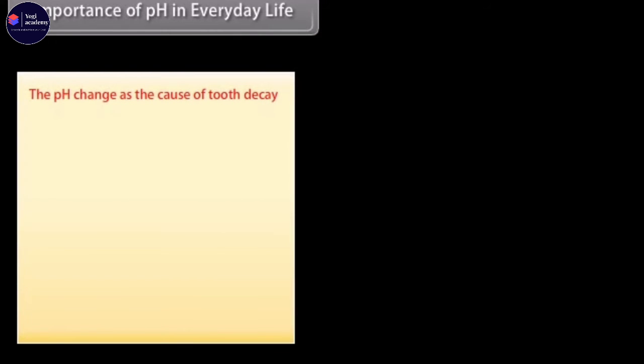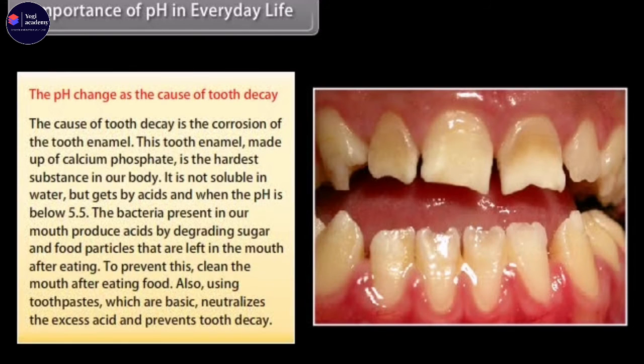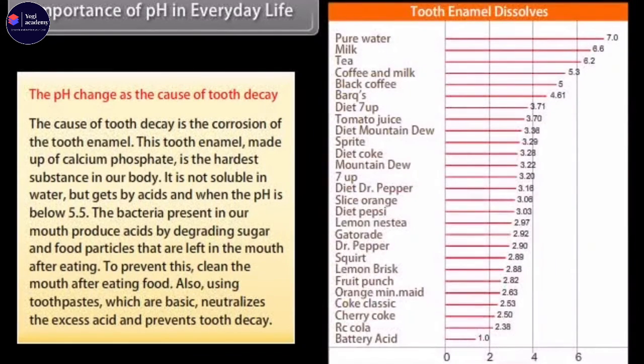The pH change as the cause of tooth decay. The cause of tooth decay is the corrosion of the tooth enamel. This tooth enamel, made up of calcium phosphate, is the hardest substance in our body. It is not soluble in water but gets by acid when the pH is below 5.5. The bacteria present in our mouth produce acids by degrading sugar and food particles that are left in the mouth after eating. To prevent this, clean the mouth after eating food. Also using toothpastes which are basic neutralizes the excess acid and prevents tooth decay.